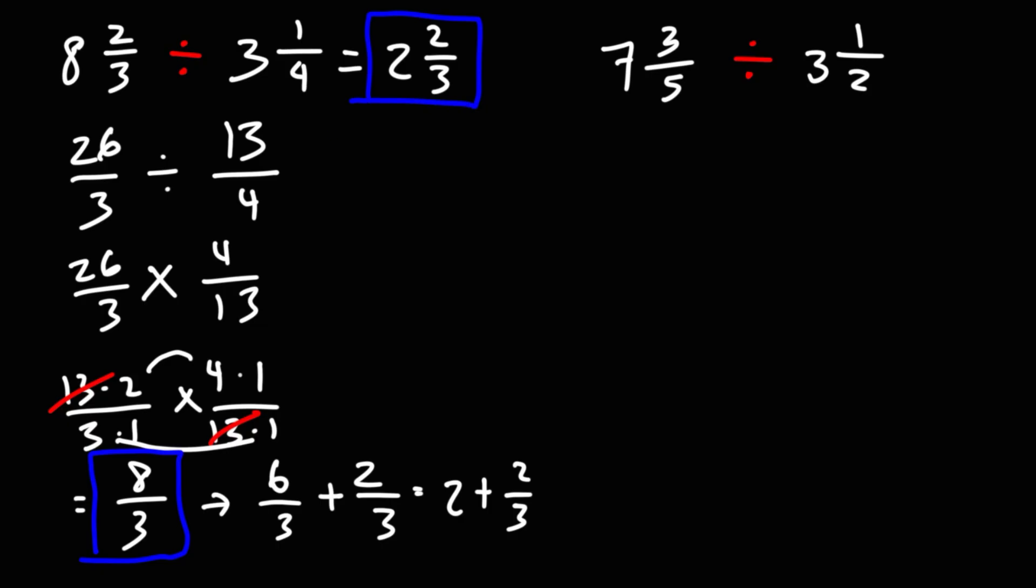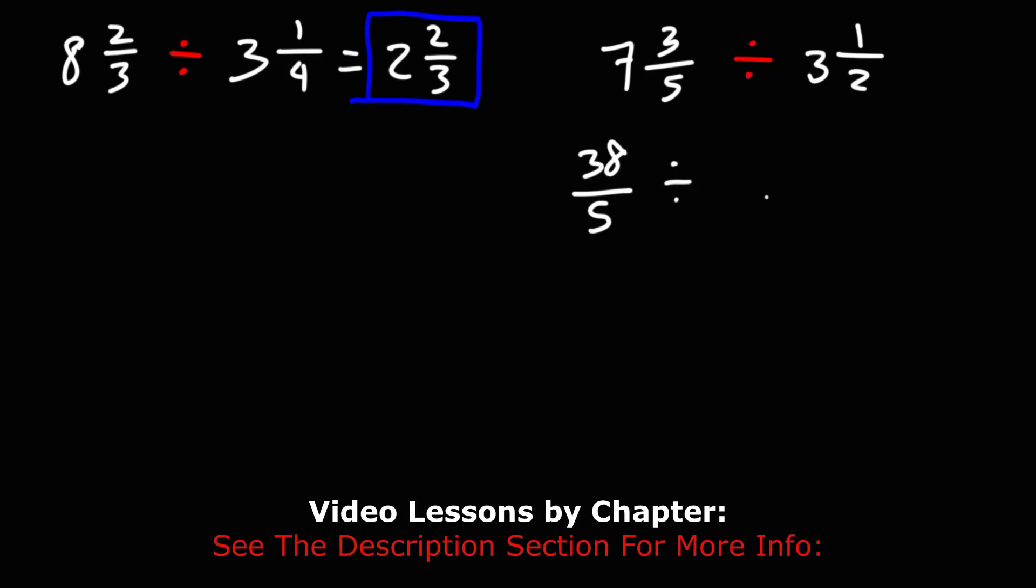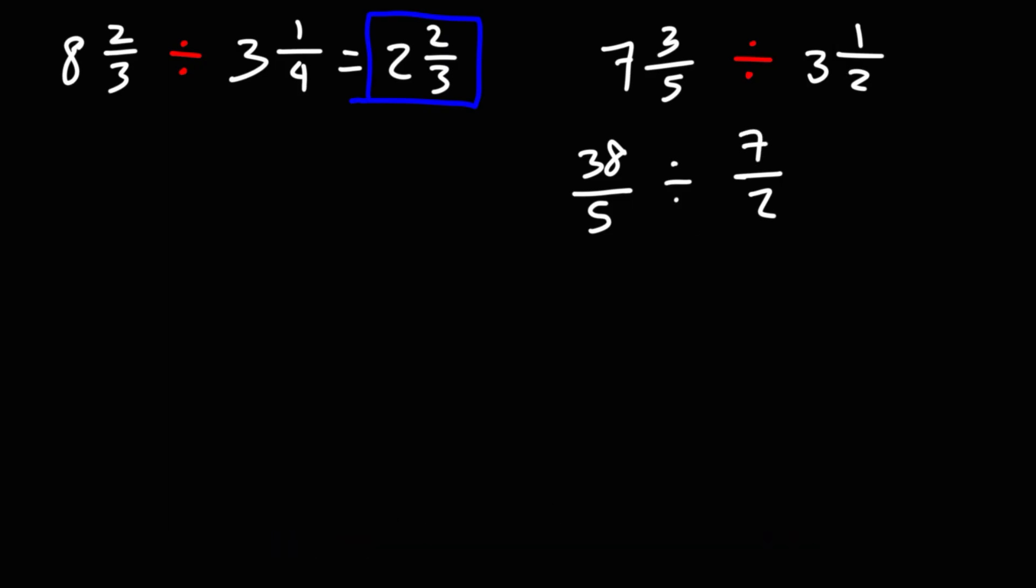Now for the second example, let's go ahead and convert the mixed numbers to improper fractions. So let's keep the denominator the same. Here we have 5 times 7, which is 35, plus 3. That's going to be 38. The second denominator is 2. Here we have 3 times 2, which is 6, plus 1. That's going to be 7. So 3 and 1 half is the same as 7 over 2.